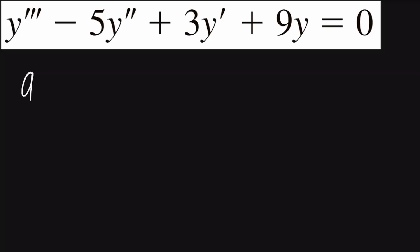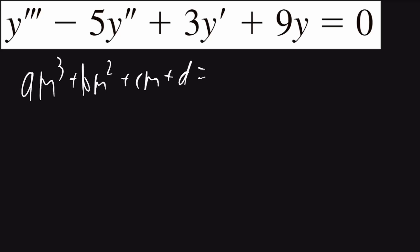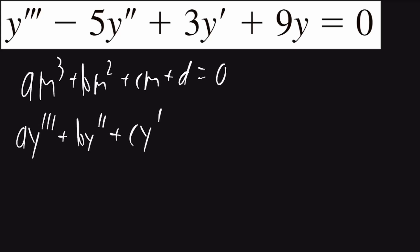For this problem, I'll find the auxiliary equation. It'll be in the form a times m cubed plus b times m squared plus c times m plus d equals 0. The differential equation will be in the form a times y triple prime plus b times y double prime plus c times y prime plus d times y equals 0.